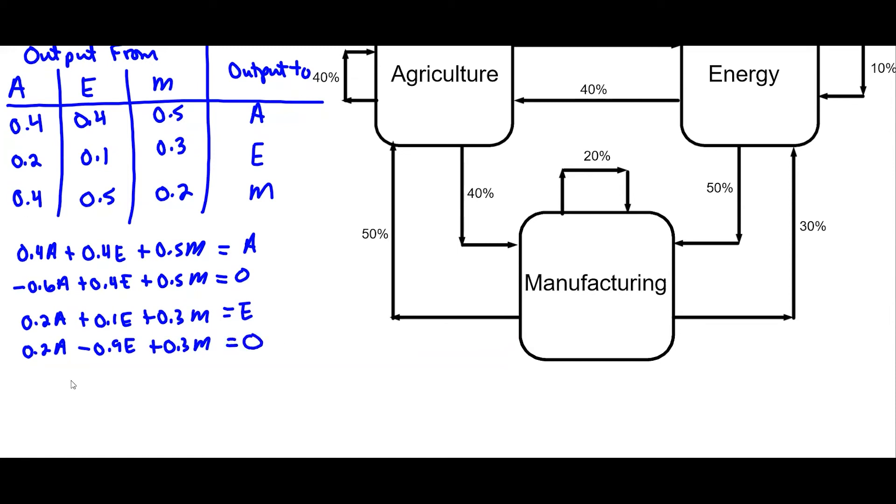And then lastly for machinery, 0.4 agriculture plus 0.5 energy plus 0.2 manufacturing equals the total for manufacturing. And then subtract M, we get negative 0.8M equals zero. So we're going to use these three equations in our system.